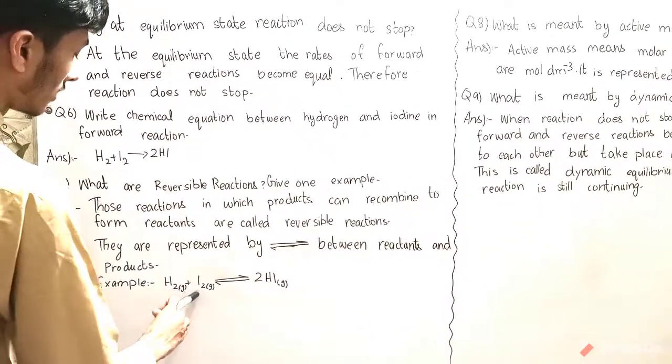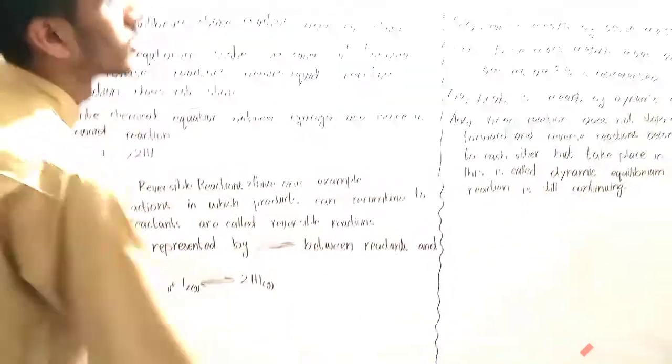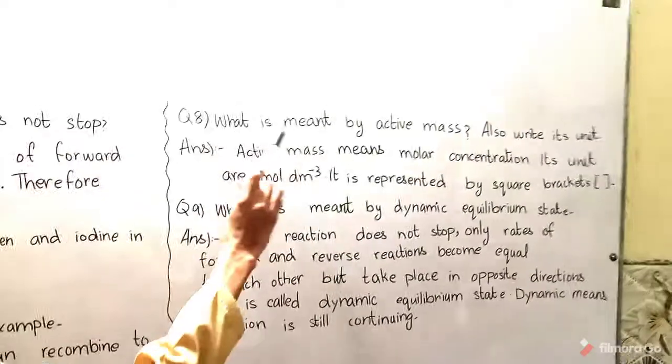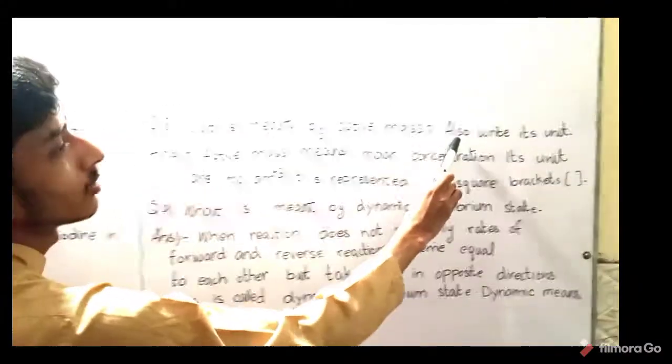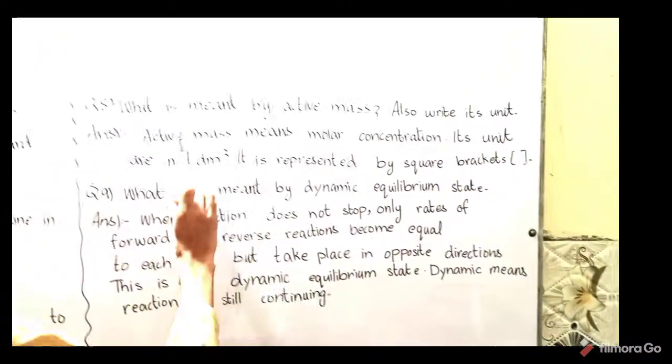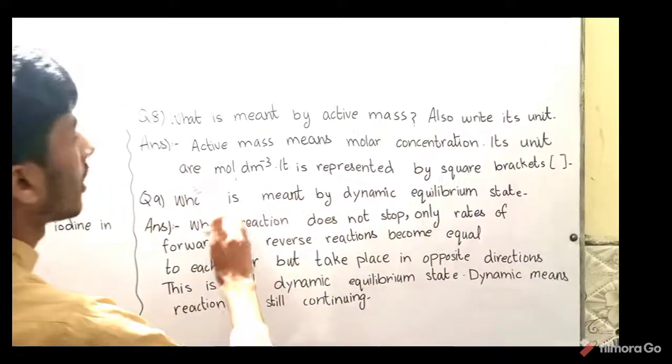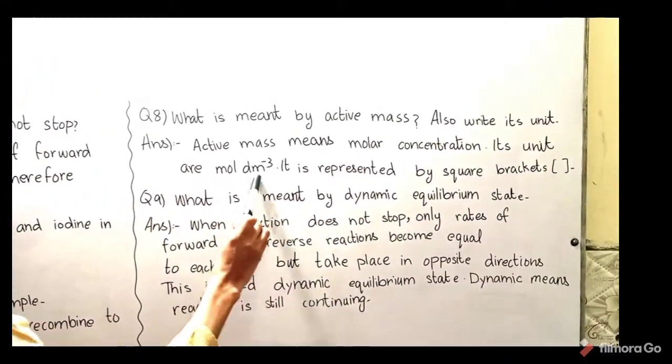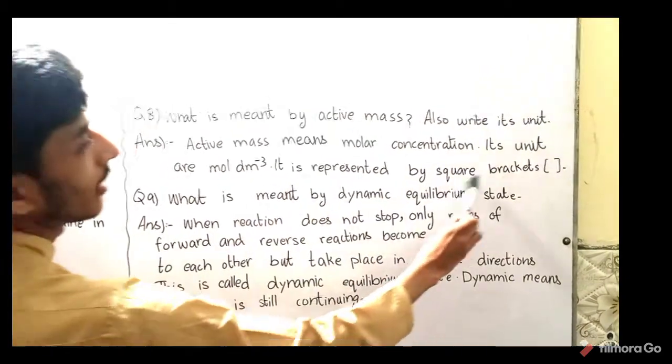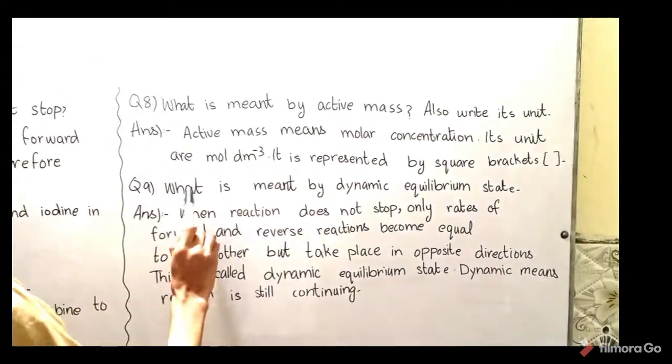Question number eight: What is meant by active mass? Also write its unit. Active mass means molar concentration. Its unit is mole per decimeter cube. It is represented by square brackets.